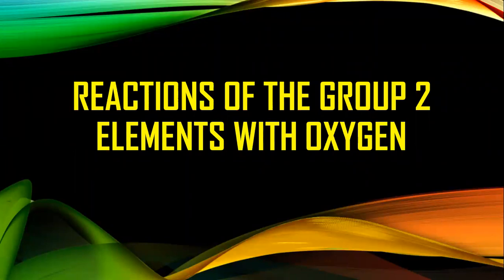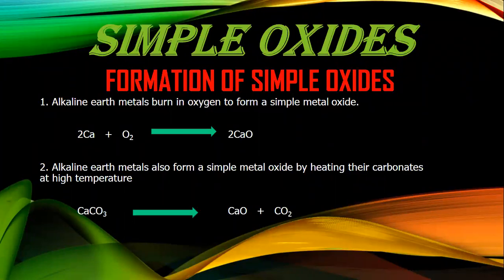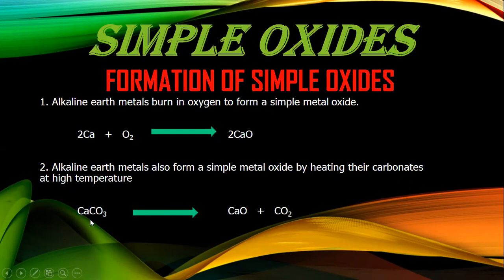The next topic is the reaction of group 2 elements with oxygen. When group 2 elements react with oxygen, they form oxides. Two types of oxides are more common: simple oxides and peroxides. Simple oxides can be produced by two ways: first, by direct reaction of alkaline earth metal with oxygen, and second, by decomposition of carbonates at high temperature — for example, calcium carbonate decomposes at high temperature to give calcium oxide plus carbon dioxide.